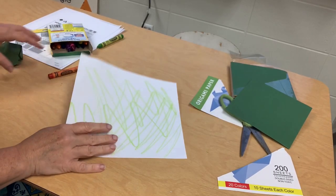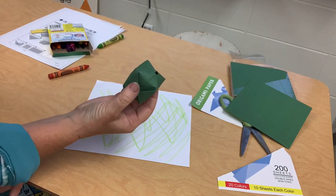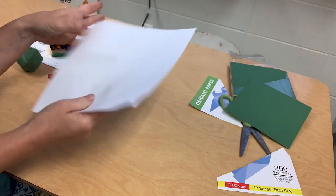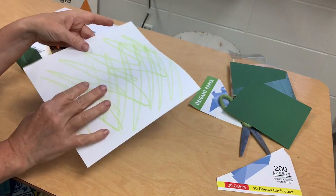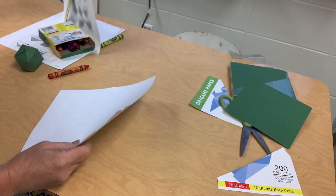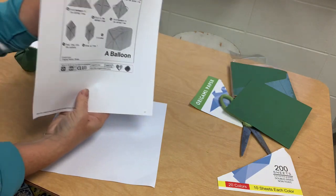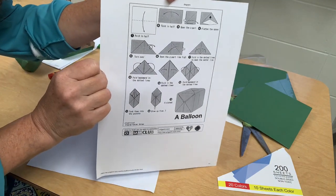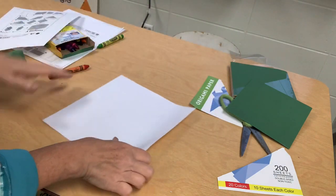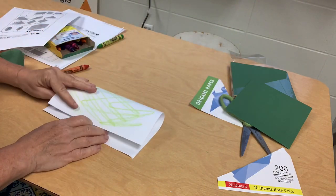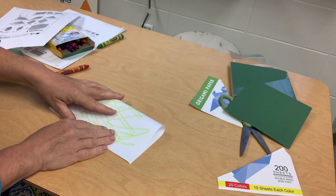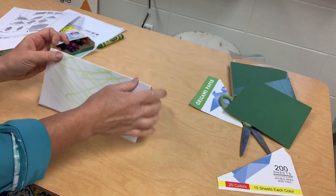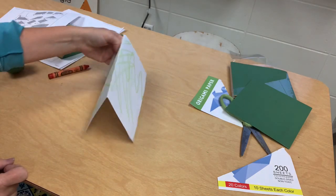So now we're going to make this origami balloon. I've colored one side of the paper so I can distinguish the front of the paper from the back. I'll post these origami instructions in my lesson. Here we go. We're going to fold the paper in half. This is called a mountain fold because it's like a mountain or a tent fold.